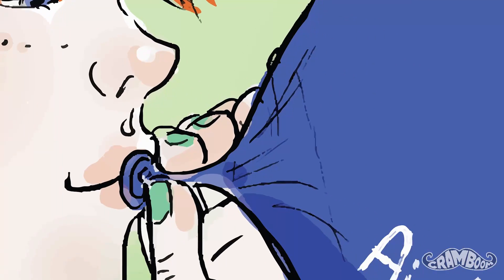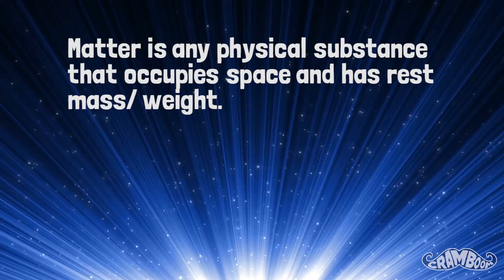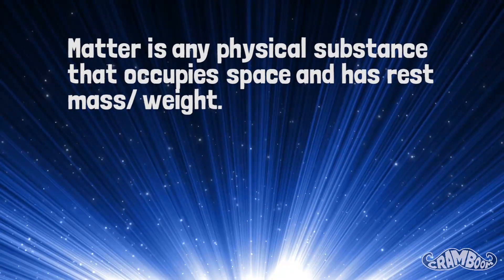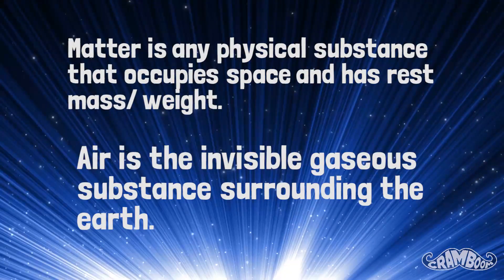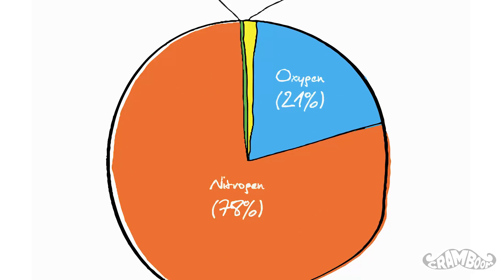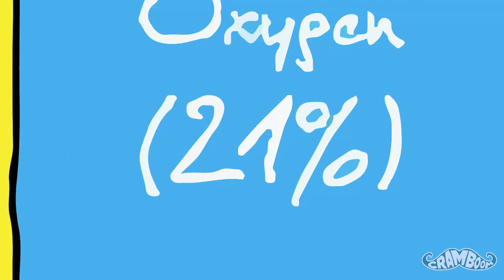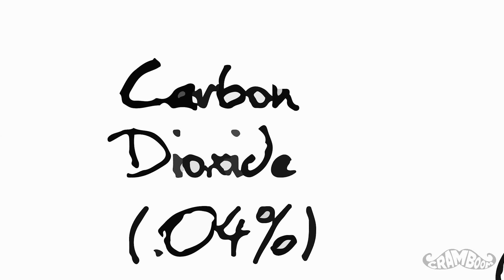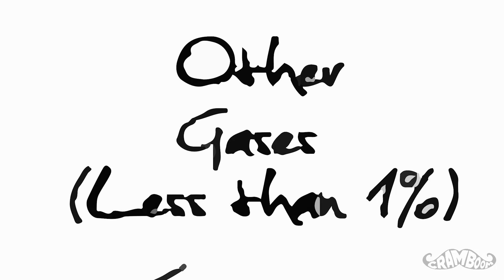How do we know air is really matter? Matter is any physical substance that occupies space and has rest mass and weight. Air is the invisible gaseous substance surrounding the earth, made up of 78% nitrogen, 21% oxygen, 0.04% carbon dioxide, and less than 1% other gases.